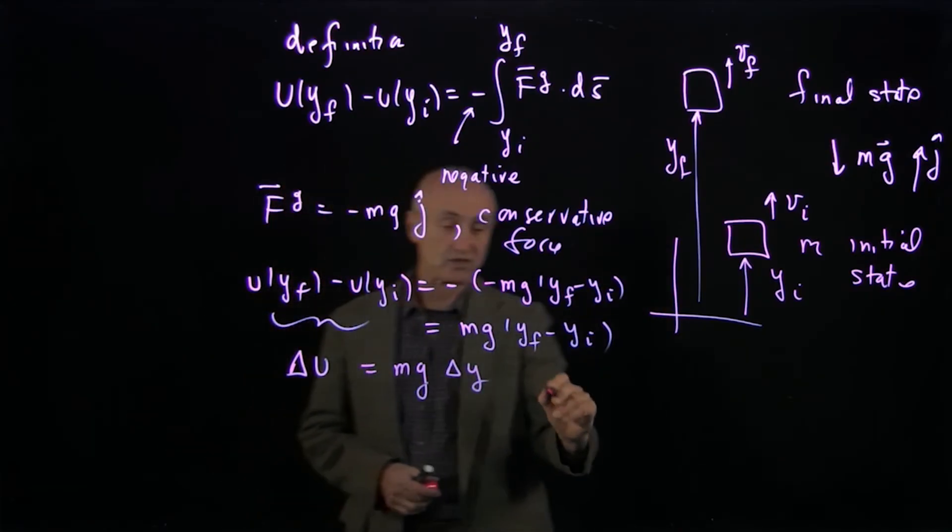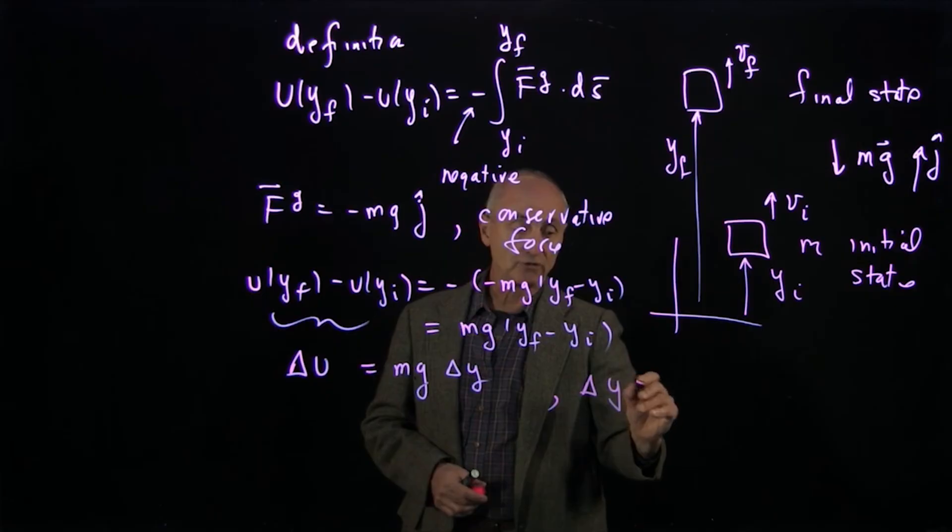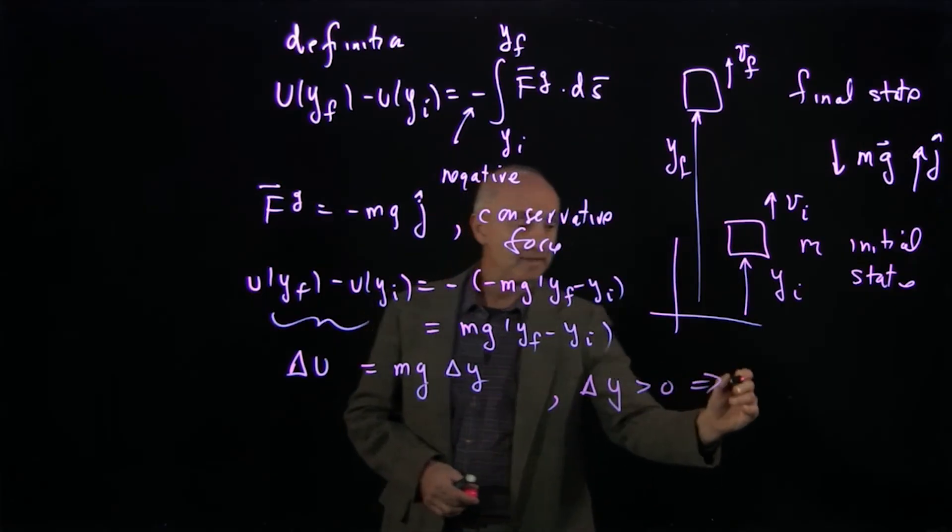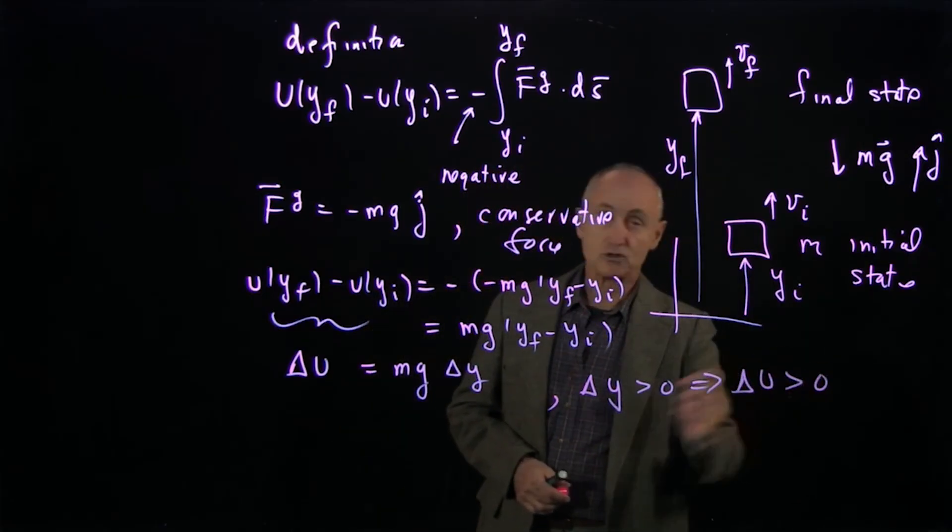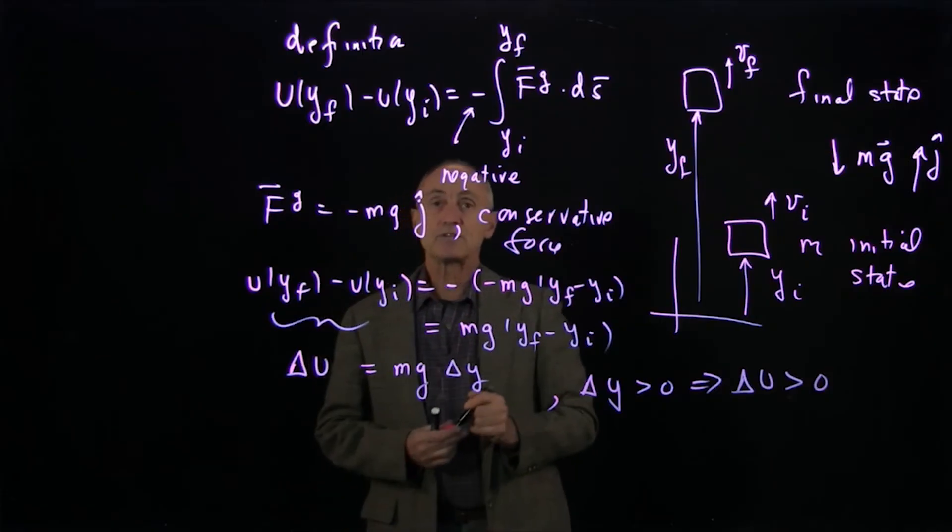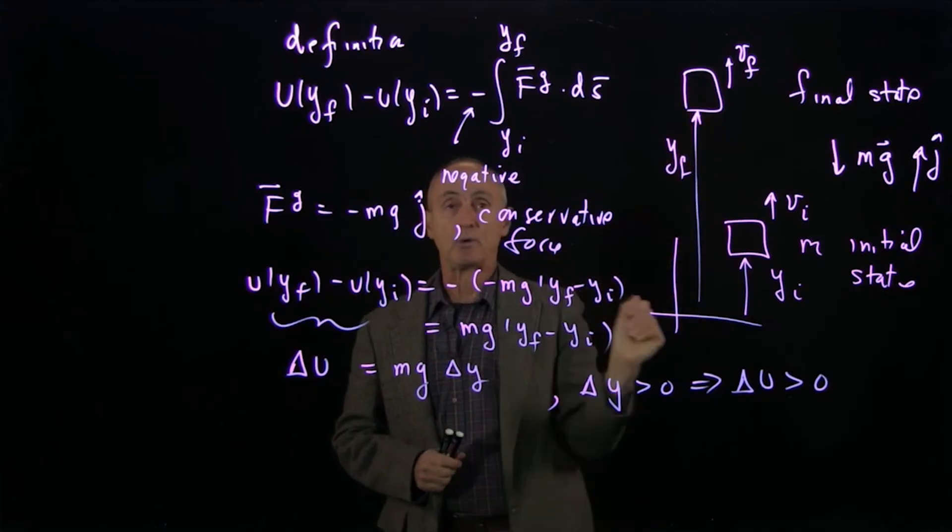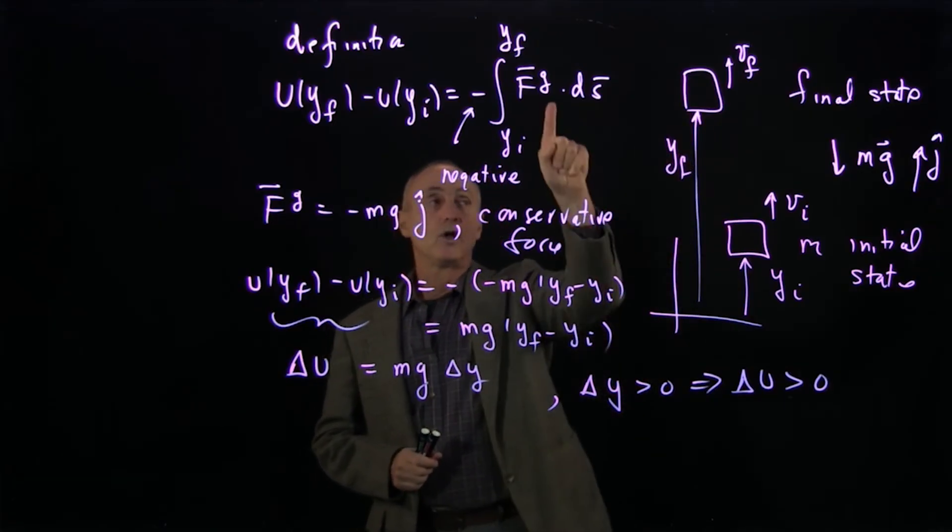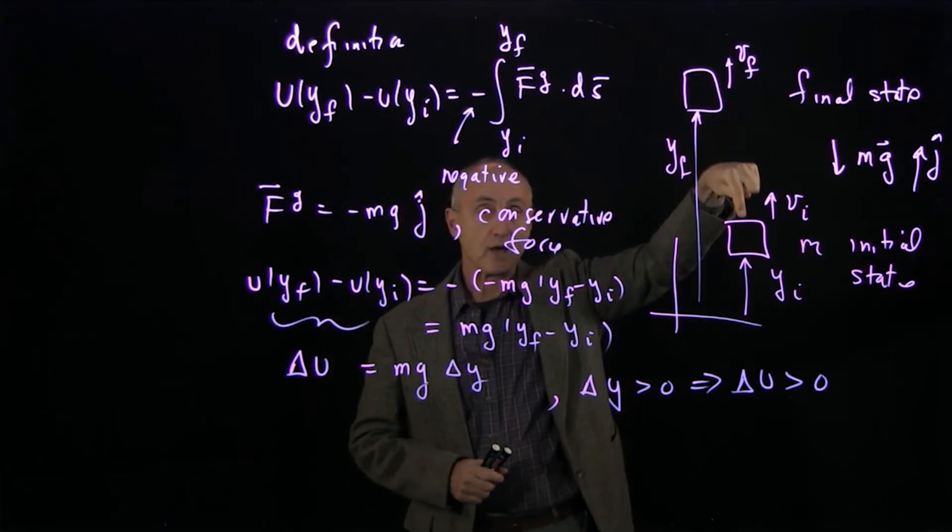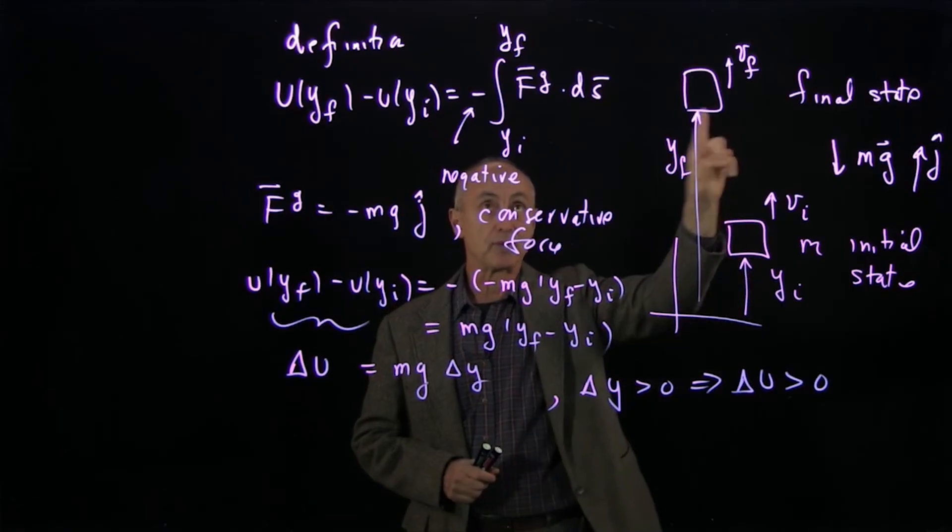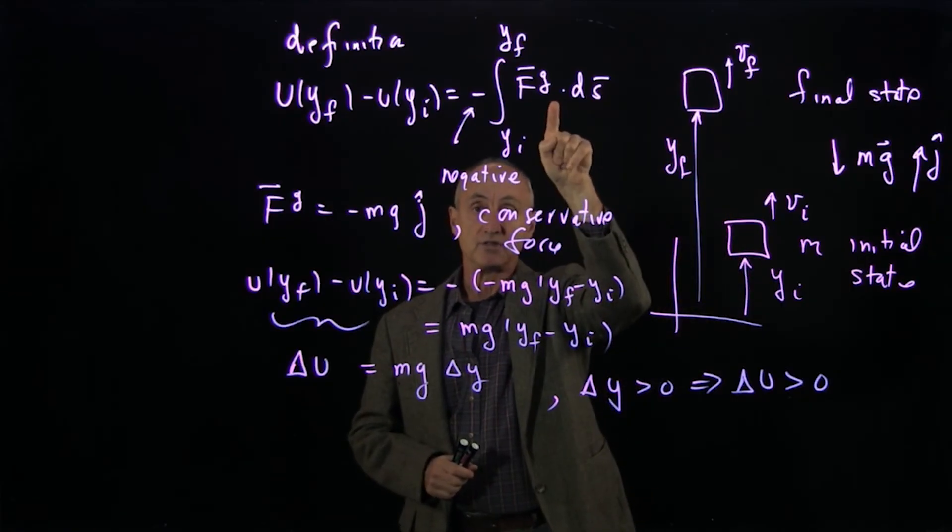And so we see here for this example that if delta y is positive, that implies that the potential energy is increasing. Now, let's connect that to our definition. Why is the potential energy increasing when we raise something? Well, the gravitational force points downwards, the displacement is upwards, so the work done is negative. And another minus sign means the change in potential energy is positive.